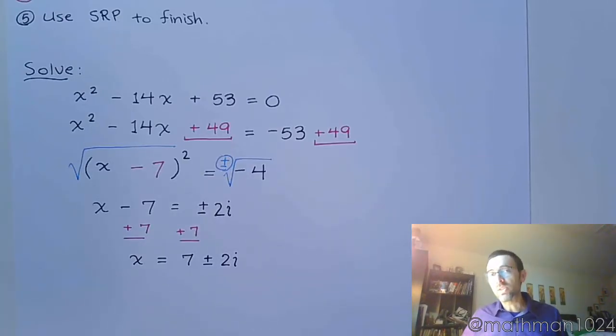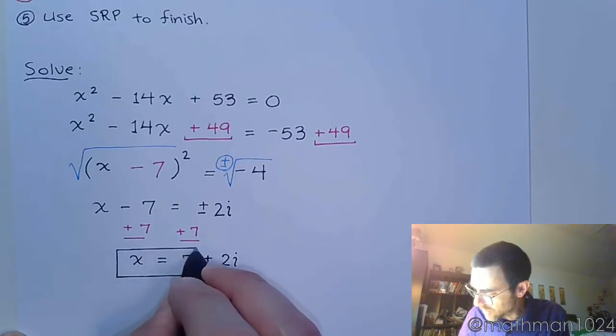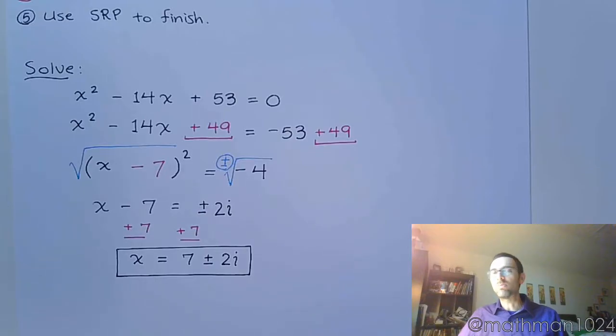And you see that since we have a solution that contains i, there's really no point in separating out the plus and the minus. This answer right here is good enough. If you wanted to separate and say 7 plus 2i and 7 minus 2i, you can. But there's no other work for you to do.